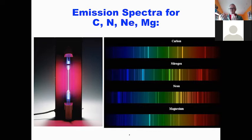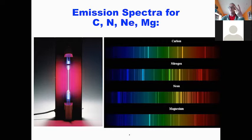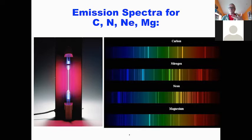Bohr's hypothesis of just single energy levels 1, 2, 3, 4, 5 breaks down the minute you get anything more complicated than hydrogen. Atoms can have two electrons, five, ten, fifty — so we needed a new hypothesis, a new model that explained everything more complicated than hydrogen.